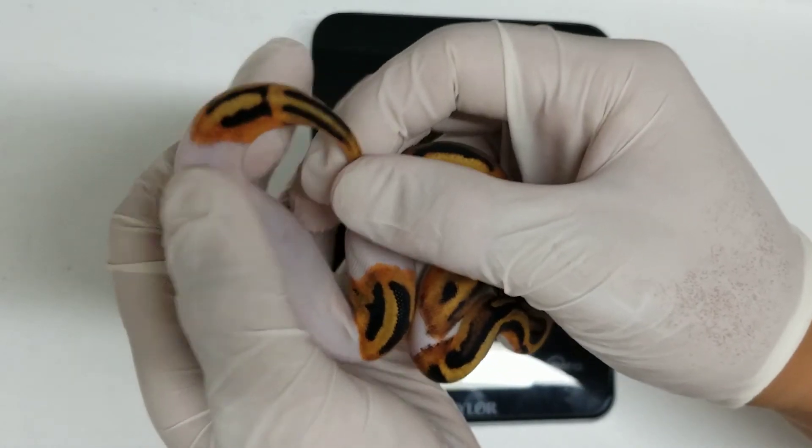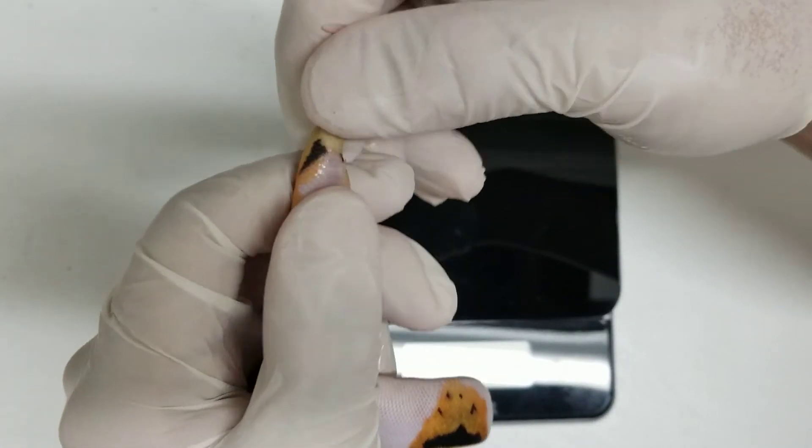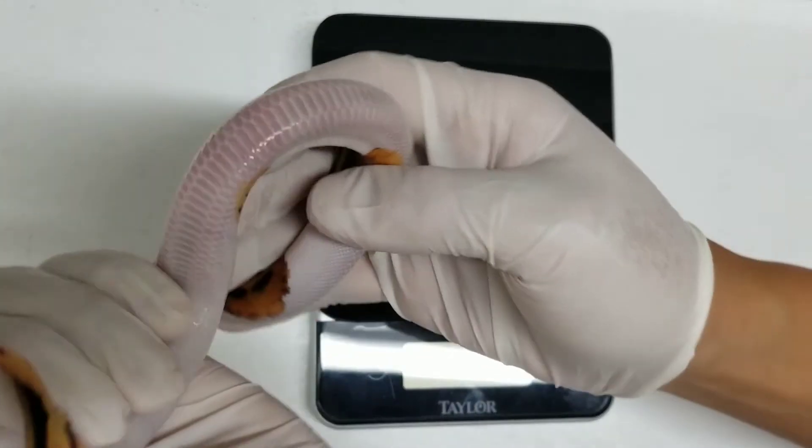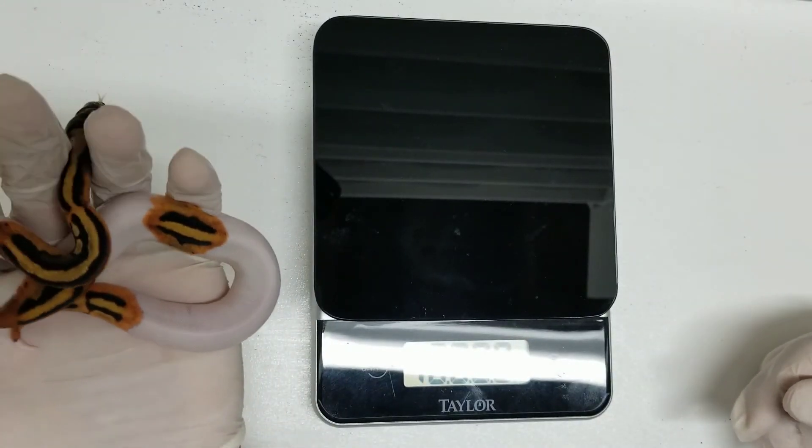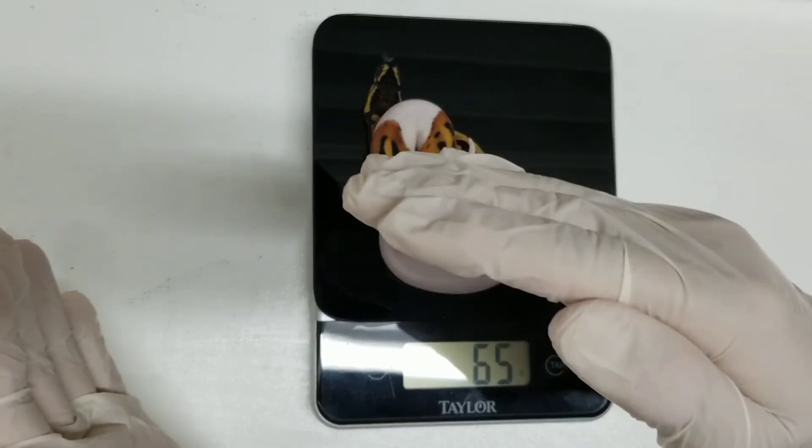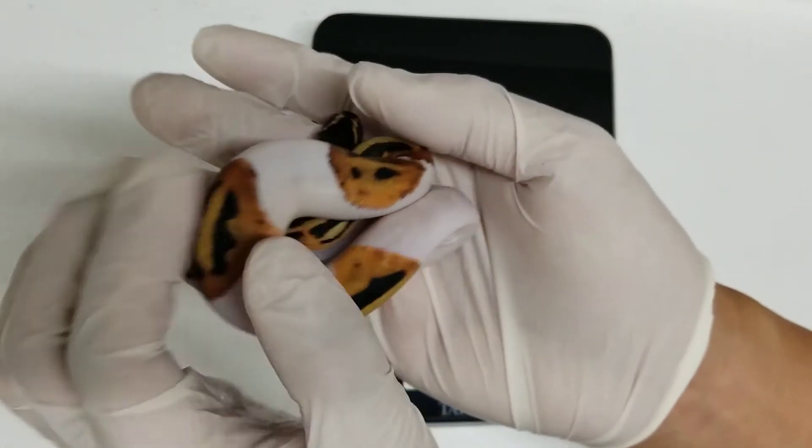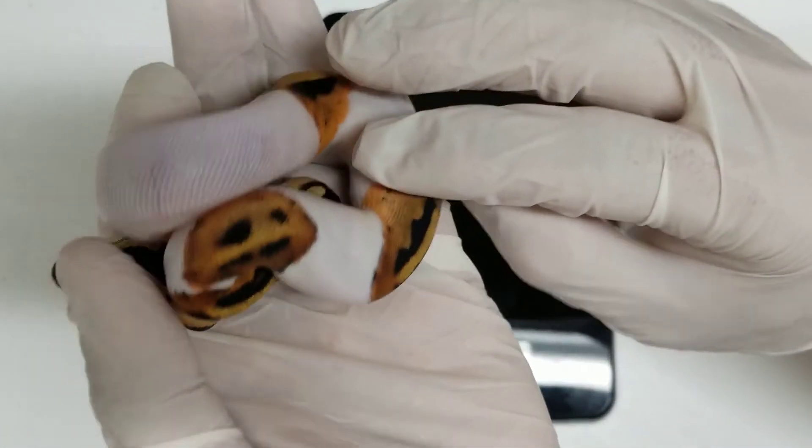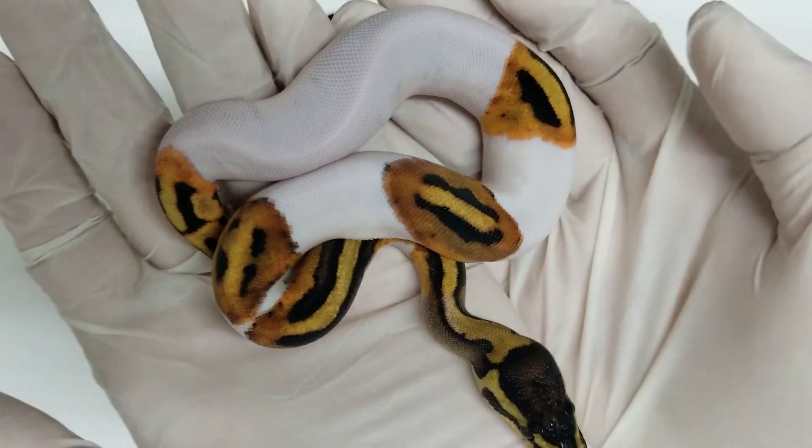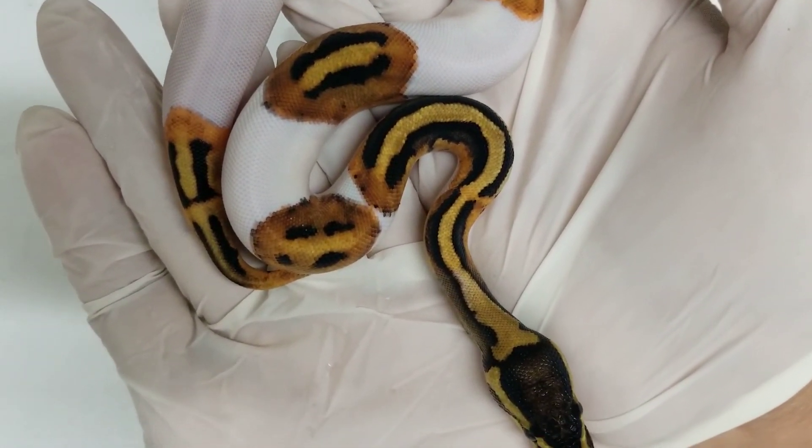So we'll go ahead and sex this one and see if that's correct. And we are correct. I'm going to go ahead and weigh this one. It's kind of hard to see the number. There we go. 65 grams, this little girl. Very pretty, very good balance of white and pattern. This one just shed, it was the last one to shed, so I thought I'd bring her out first. Alright, on to the next one.